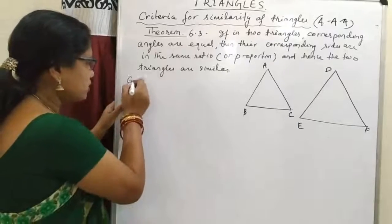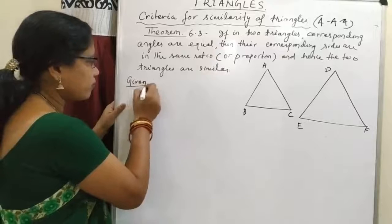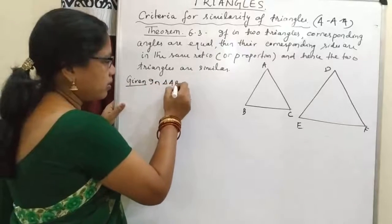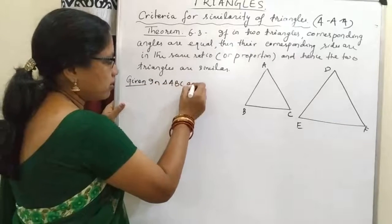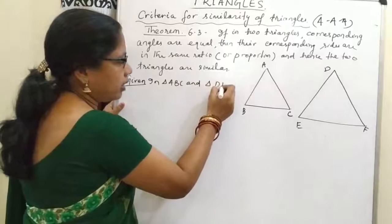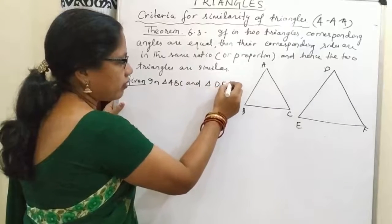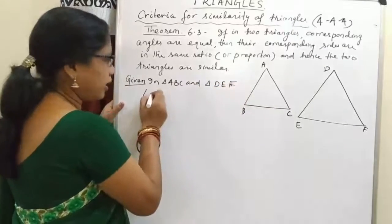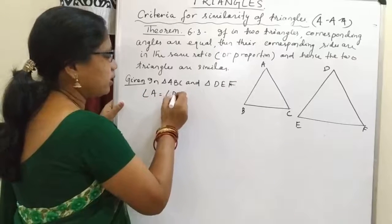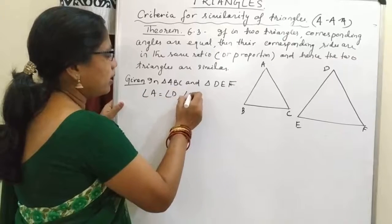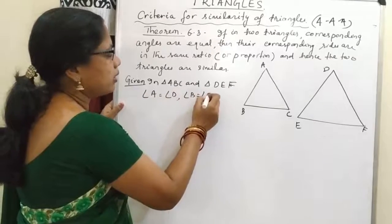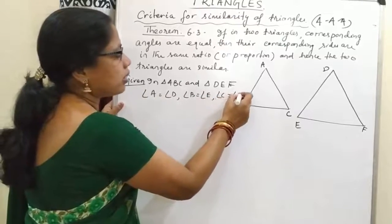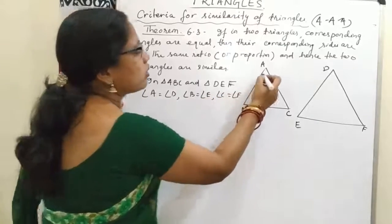It is given that in triangle ABC and triangle DEF, angle A is equal to angle D, angle B is equal to angle E, and angle C is equal to angle F.